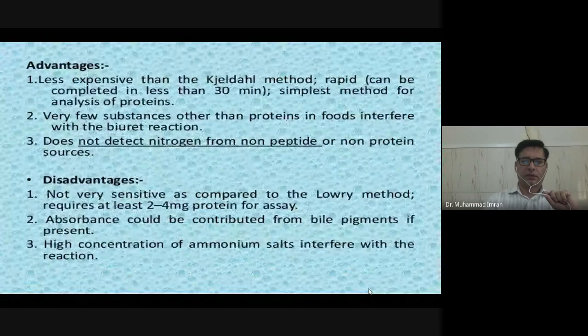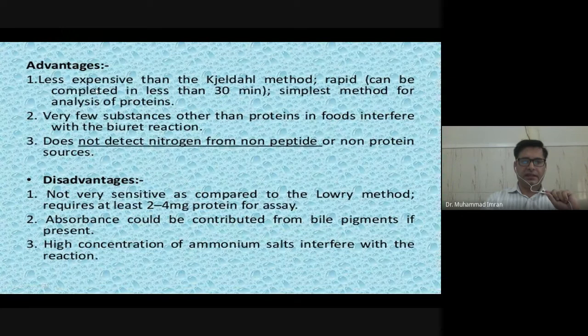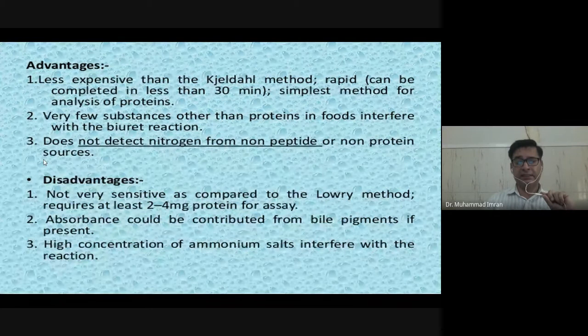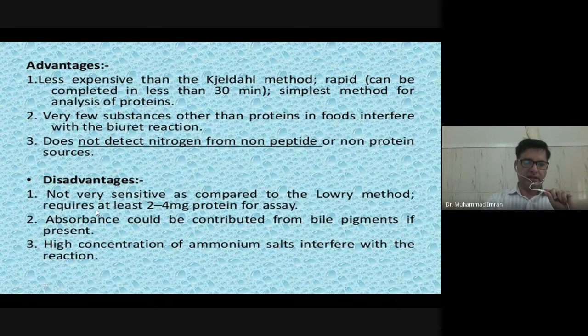Advantages of the Biuret assay: less expensive than Kjeldahl, and it is rapid — takes around 30 minutes. Very few substances other than protein interfere with the Biuret assay. It does not detect nitrogen from non-peptide or non-protein sources — that is the main advantage over Kjeldahl and Dumas. Disadvantages: not very specific compared to the Lowry method. Requires at least 2 to 4 mg of protein per reaction. Absorption could be contributed by bile pigments if present, and high concentrations of sodium salts interfere with the reaction.